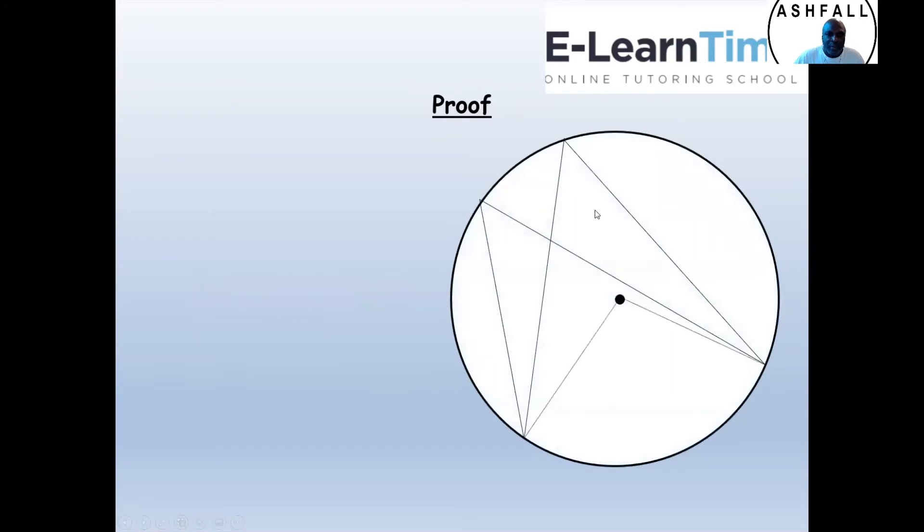I'm going to prove this. If you consider angles at the center is twice the angle at the circumference,